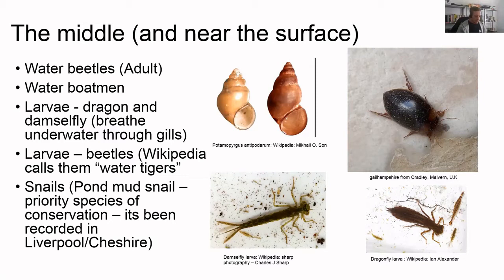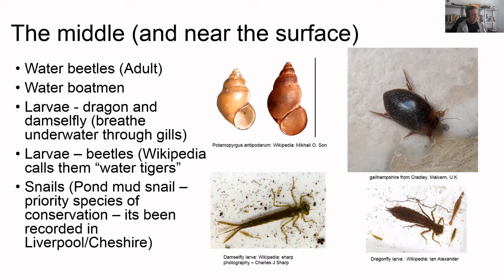I've got into snails a lot more this past year. There's a new identification book coming out from the Mollusc Society - the freshwater aquatic snail society - with lots of pictures. I emailed them expressing my excitement and they said they don't really get many emails like this! Many snails look very similar to each other, other than obvious ones like the ram's horn shape. The great pond snail - if you go to Rixton Clay Pits you'll be able to see lots of them.